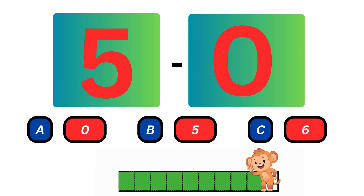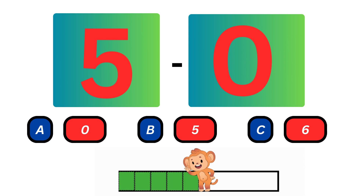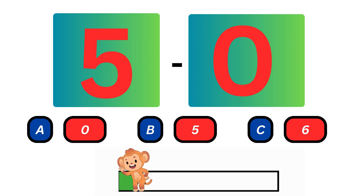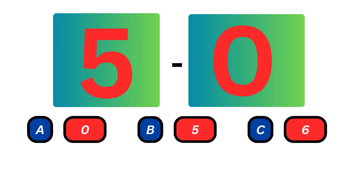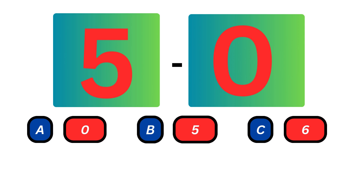What do you get when you subtract 0 from 5? When you subtract 0 from 5, you will get 5. The answer is 5. When you subtract 0 from any number, the result is the same number.